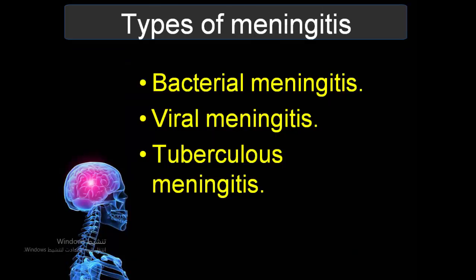Meningitis is classified according to the causative agent: bacteria cause bacterial meningitis, viruses cause viral meningitis, and Mycobacterium tuberculosis causes tuberculosis meningitis. These are the most important and common types. The most common overall is bacterial meningitis, which is more common in children than adults.